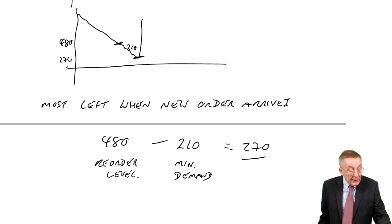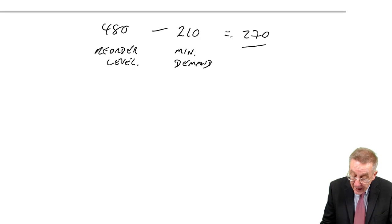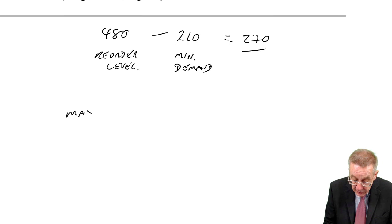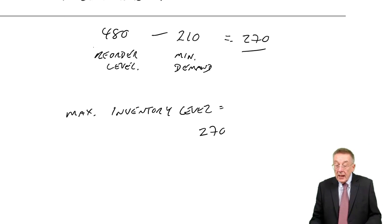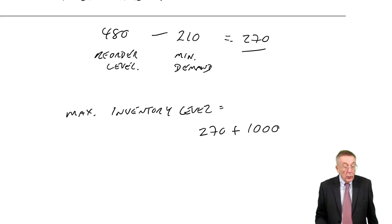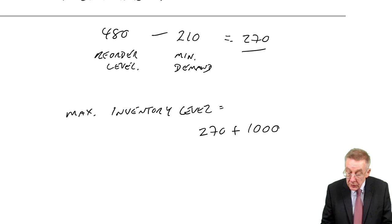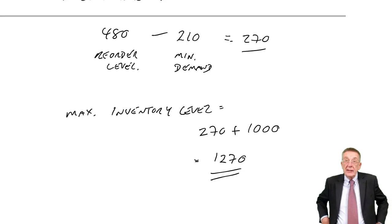And so our maximum possible inventory level is the 270, the maximum that could be left, plus the 1000 in the order, the order quantity. So yes, 1270. That's the most that we could ever have in the inventory.